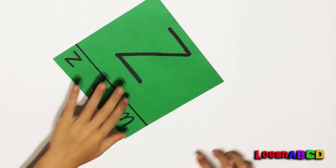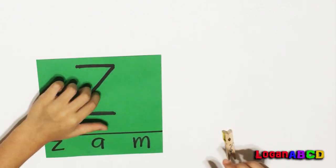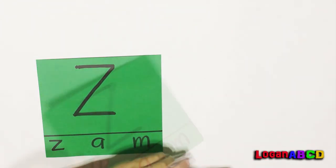The one more is the jersey. Z. Z, lowercase is Z. Z, Z is for zipper.